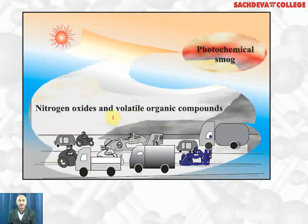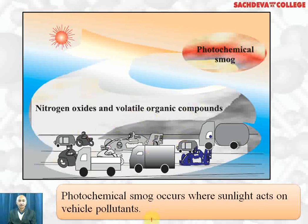Nitrogen dioxide and other oxides of nitrogen and volatile organic compounds are formed in vehicles by incomplete combustion of fuels and they form photochemical smog. Photochemical smog occurs where sunlight acts upon vehicle pollutants and generates a lot of reactive species and free radicals. It is extremely harmful for the health of plants, animals and human beings.